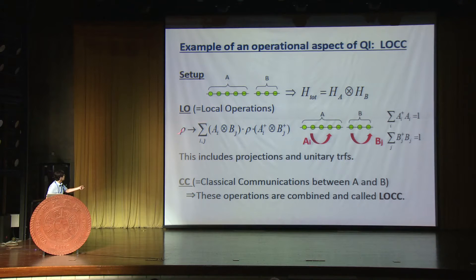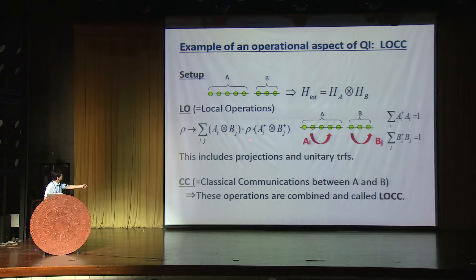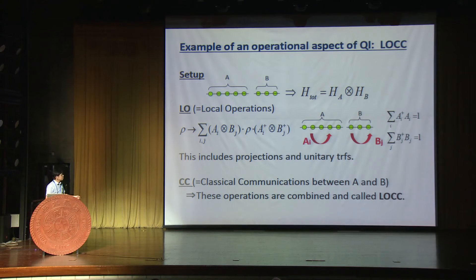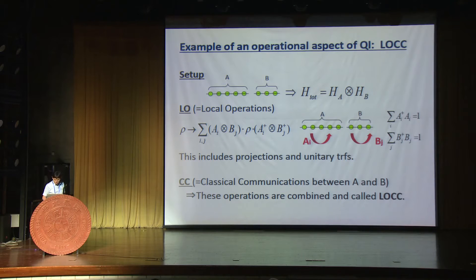The density matrix transforms as a direct product sum over possibilities. We should preserve the trace of the density matrix, so we need these conditions. These are the LO part, and CC — classical communication — is where we can send some classical signal from A to B, from Alice to Bob, and based on the result, we can do some operation B_j. These two are combined in LOCC.